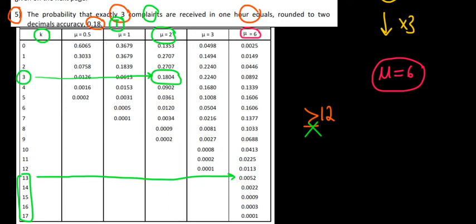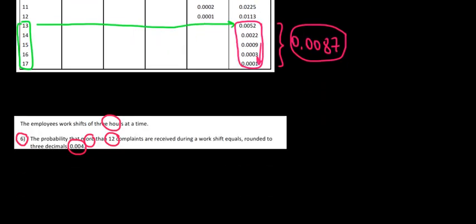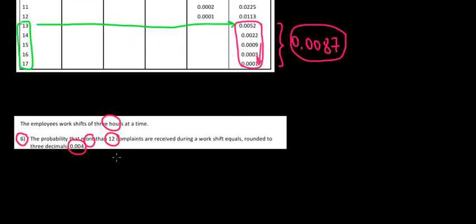So let's add all the numbers. We will basically add 0.052 plus 0.022, 0.009 all the way down. And if we work out the math over here, we get the probability of 0.0087 and that seems different than what they give us in the answer because they give us 0.004. So the answer to this question is false and we are done.